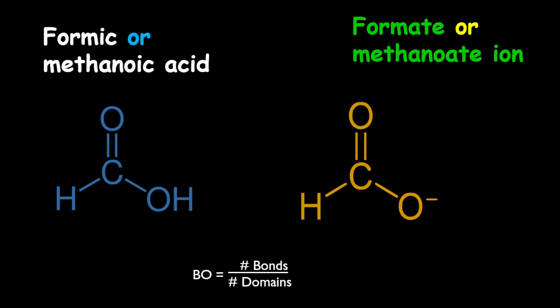Let's look at the differences. The big difference between these two structures is really that the formic acid has the H — there's no H in the formate ion, so therefore there's a charge. In the formic acid, there are three different bonds: one is a C-H bond, one is a C=O bond, and one is a C-O-H bond. They are different. However, we can look at each individual bond and state the bond order.